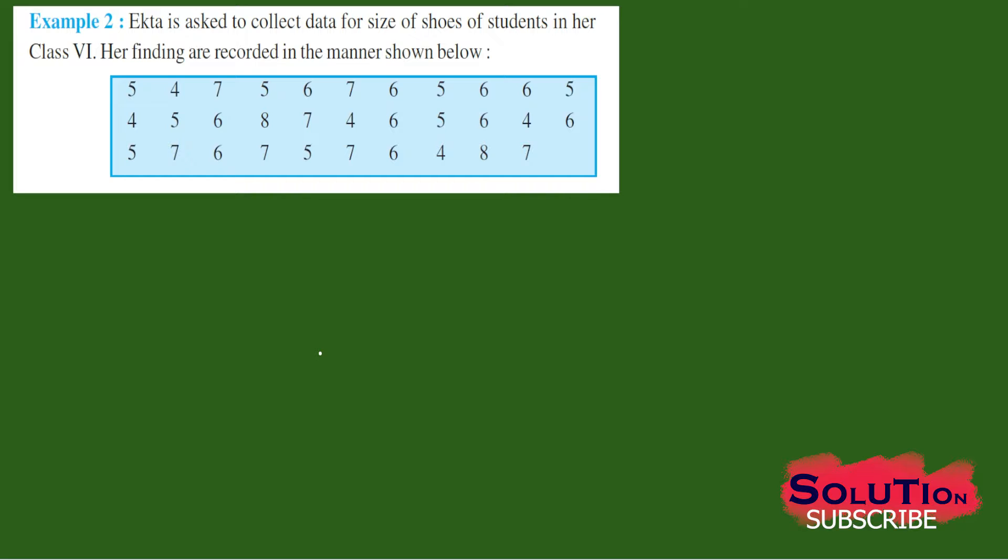You can see it is written here 5, 4, 6, 7 like this. She asked one by one and recorded the data. Now from here we are not getting information because it is not arranged in a proper way. So it is better to arrange in a proper way so that we can get some idea or information from this data.